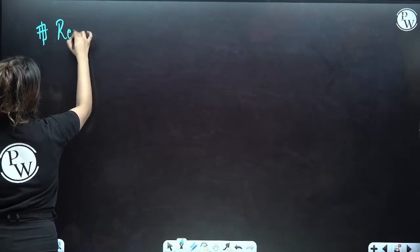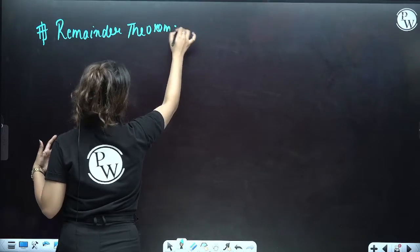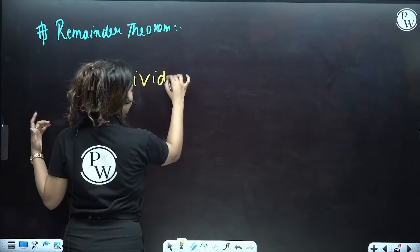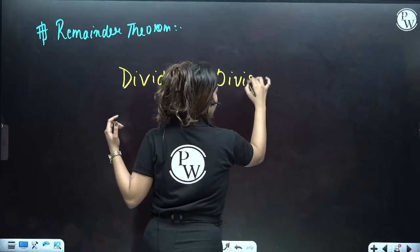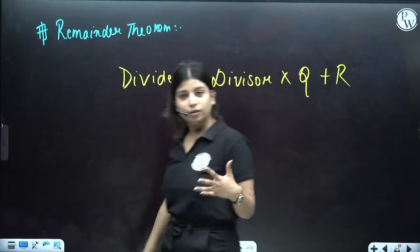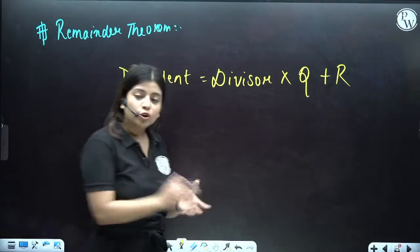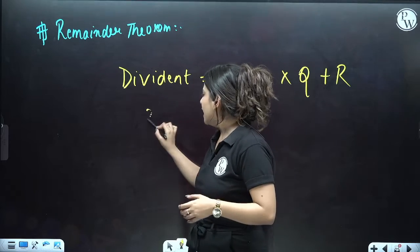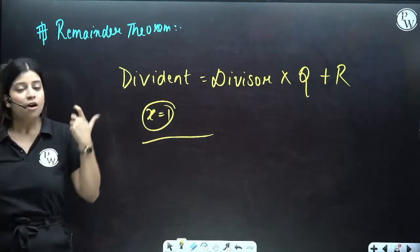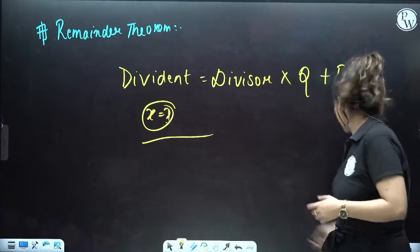The next topic is the remainder theorem. From childhood we know that: dividend = divisor × quotient + remainder. This is the remainder theorem we are going to use. Here, we will be dividing polynomials by polynomials. If we have to find the remainder, we put that value of x into the polynomial and whatever answer we get will be the remainder of your polynomial.